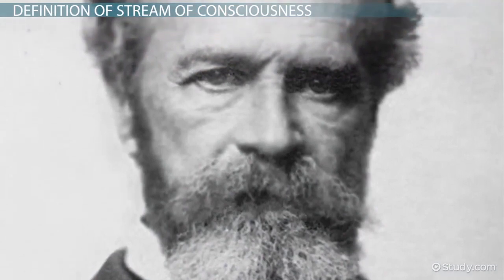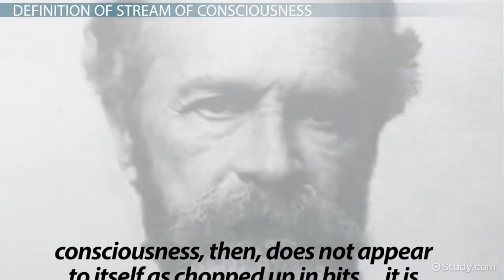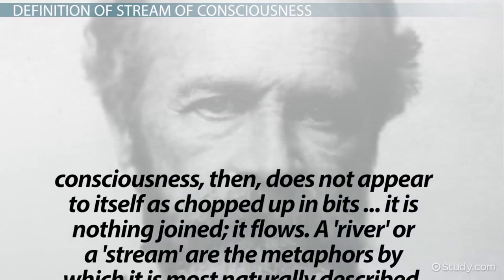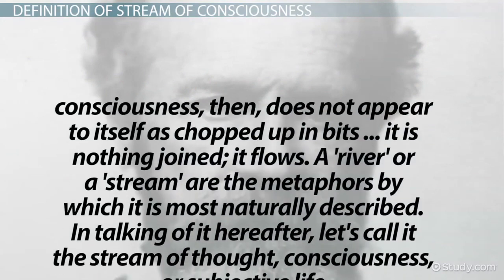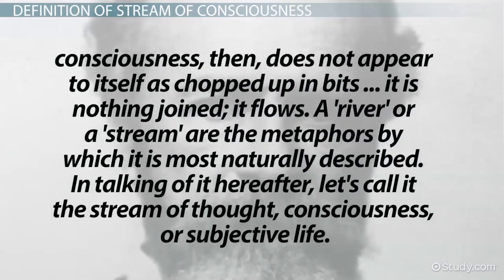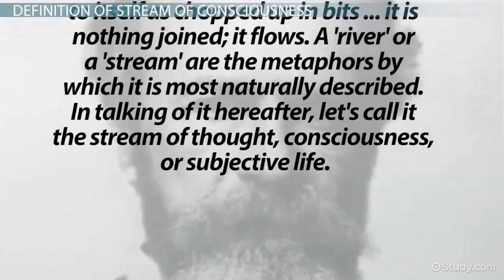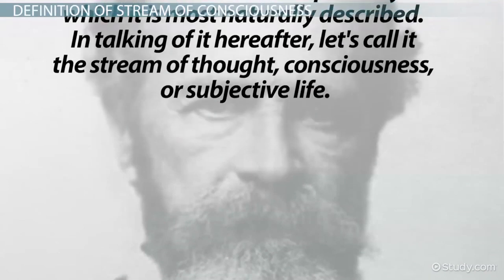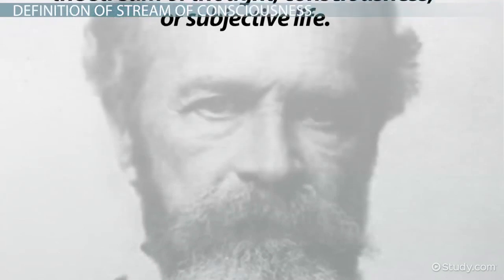The term was first used by psychologist William James in 1890, and he describes it like this: "Consciousness then does not appear to itself as chopped up in bits. It is nothing joined; it flows. A river or a stream are the metaphors by which it is most naturally described, and talking of it hereafter let's call it the stream of thought, consciousness, or subjective life."